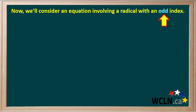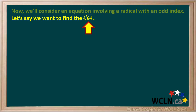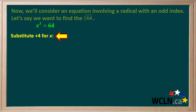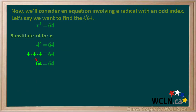Now we'll consider an equation involving a radical with an odd index. Let's find the cube root of 64 by writing x cubed equals 64 and solving for x. Substituting positive 4: 4 cubed is 4 times 4 times 4. 4 times 4 is 16, and 16 times 4 is 64. This is correct, so positive 4 works as the cube root of 64.